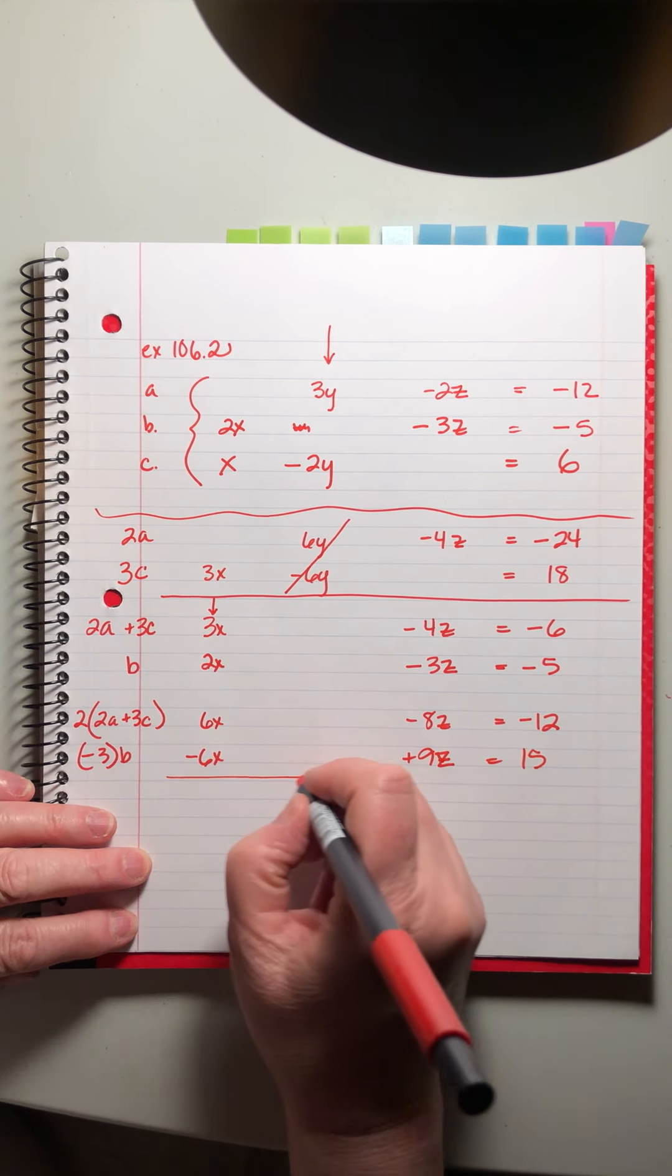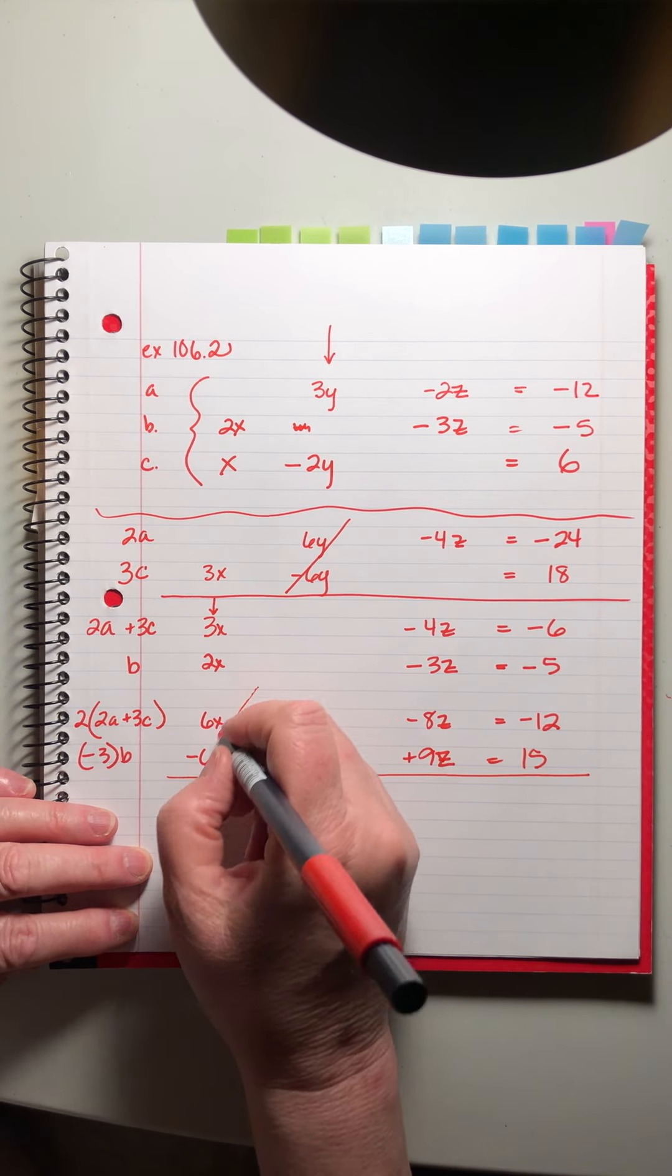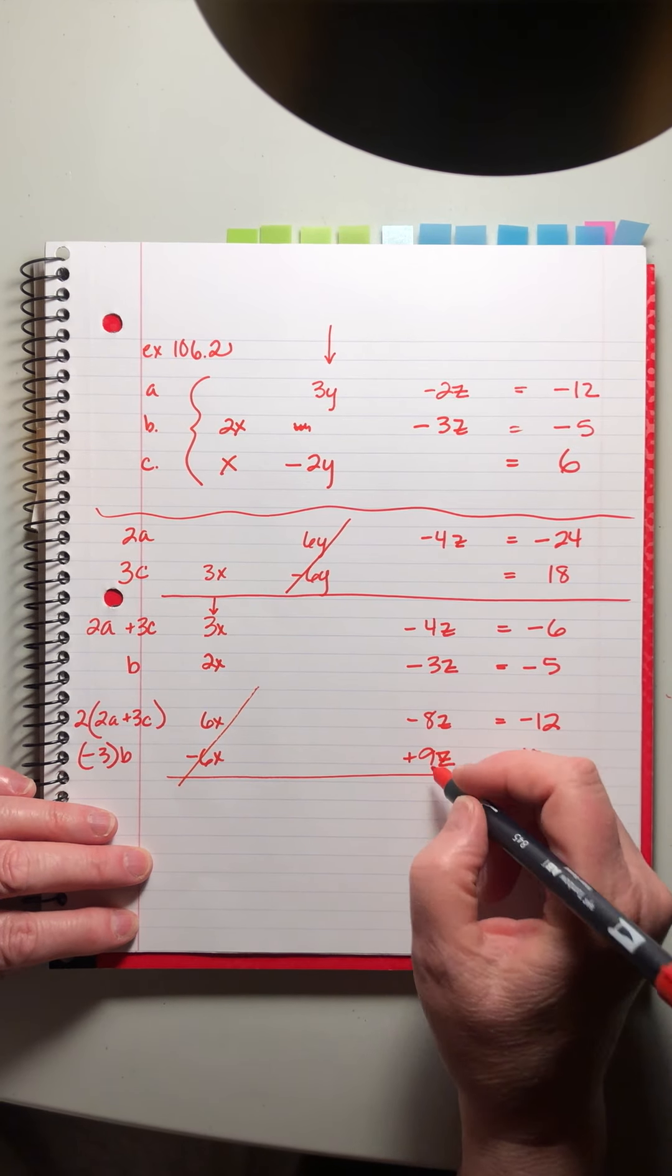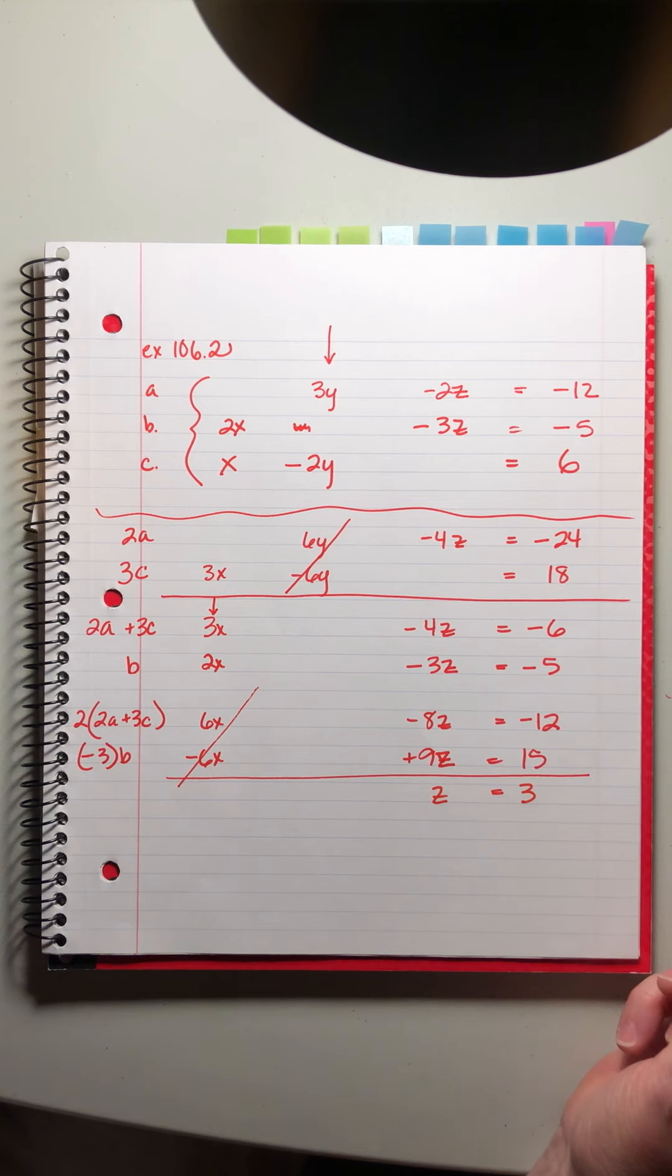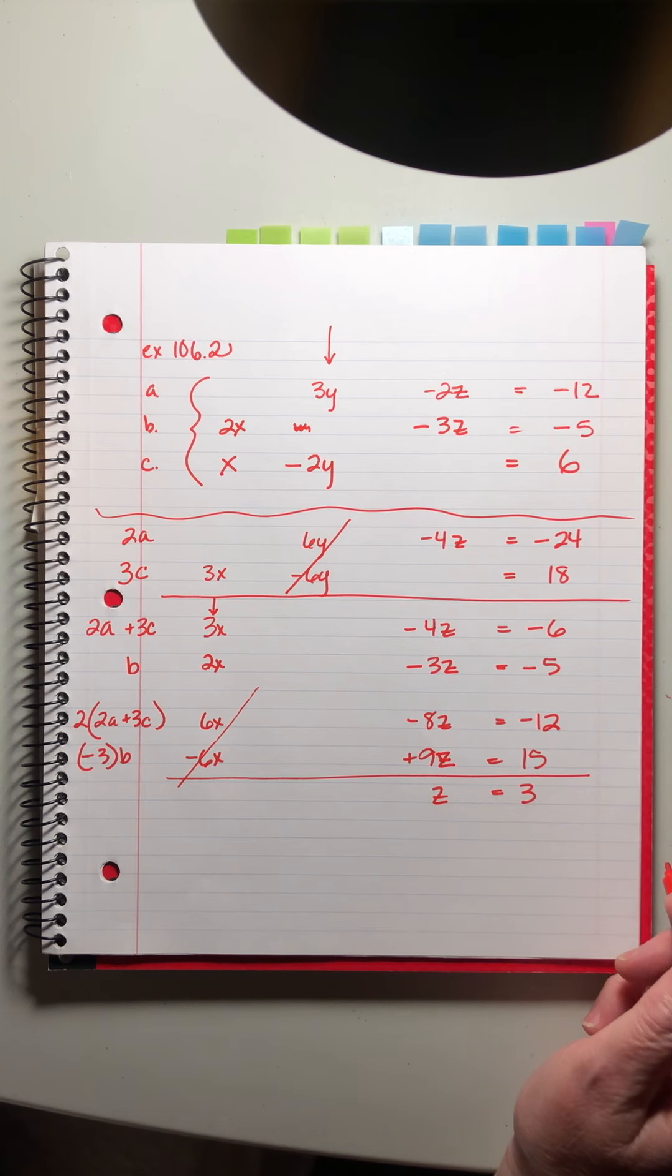And I'm multiplying the second row by negative 3. Negative 6x plus 9z. Tried to make that an x. Caught myself. Okay that times negative 3 is positive 9 and this times negative 3 is positive 15. Now we have liftoff. Those are gone. z equals 3. We don't even have to divide. It worked out perfectly. I think John is a champ. Just a champ.